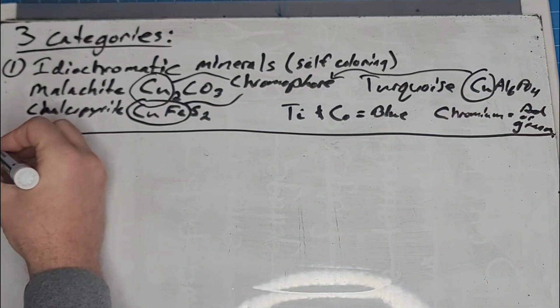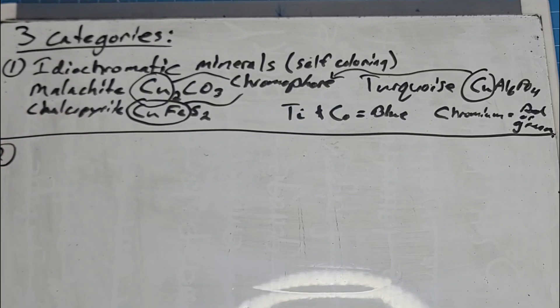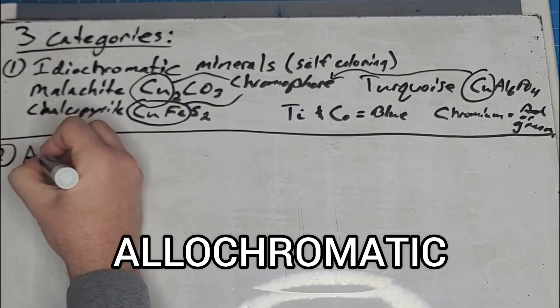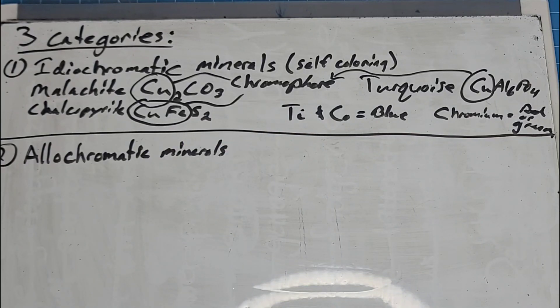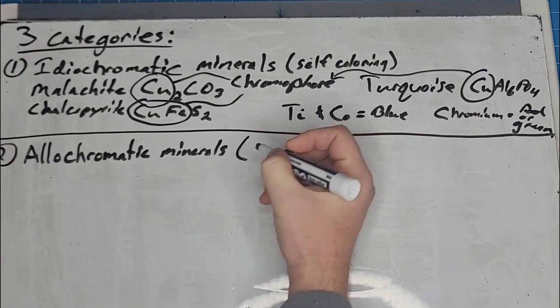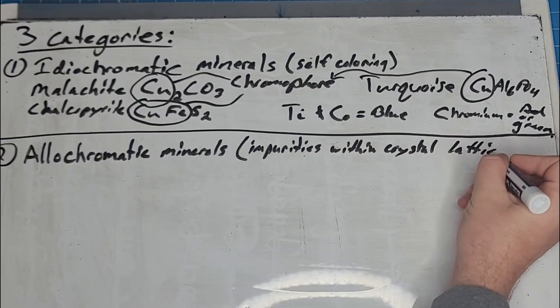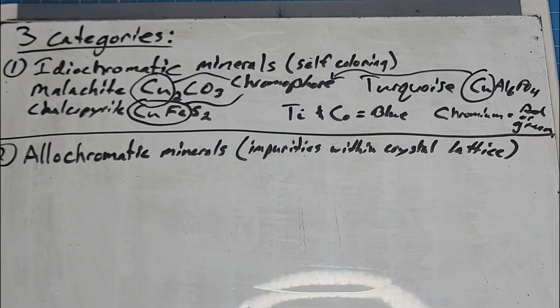The second category are called allochromatic minerals. These minerals get their color from impurities within the crystal lattice. Well, what do I mean by that?